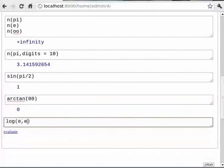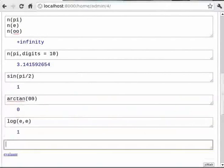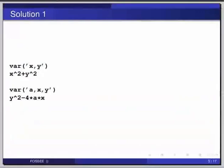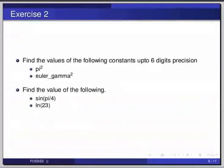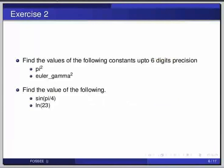Pause the video here and try out the following exercise and resume the video. Find the values of the following constants up to six digits precision: pi/2, pi squared, and Euler_gamma squared. Next, find the value of sin(pi/4) and ln(23). The solutions are on your screen.